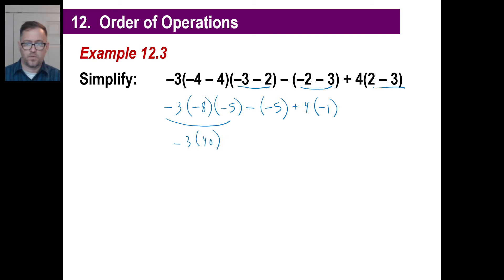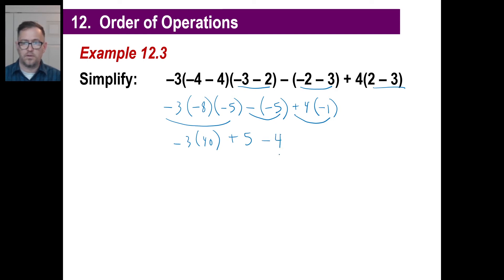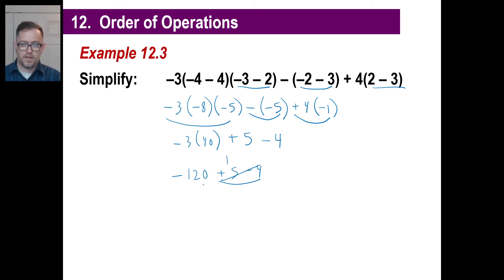Negative 3 times positive 40. The opposite of negative 5 is positive 5. Positive 4 times negative 1 is negative 4. Negative 3 times 40 is negative — 3 times 4 is 12, so that's negative 120. Then plus 5 and minus 4: 5 minus 4 is 1. Negative 120 plus 1 is negative 119.